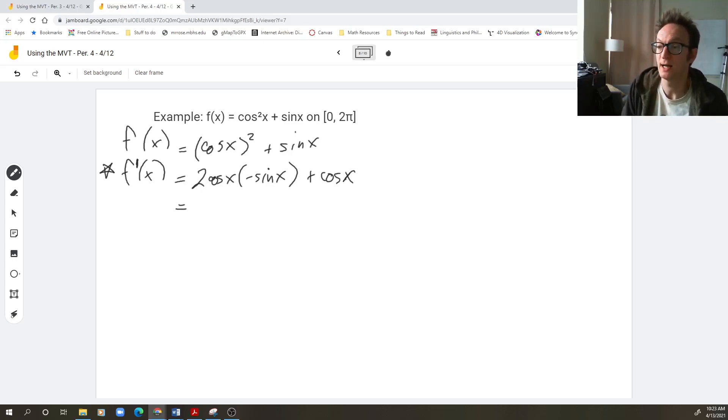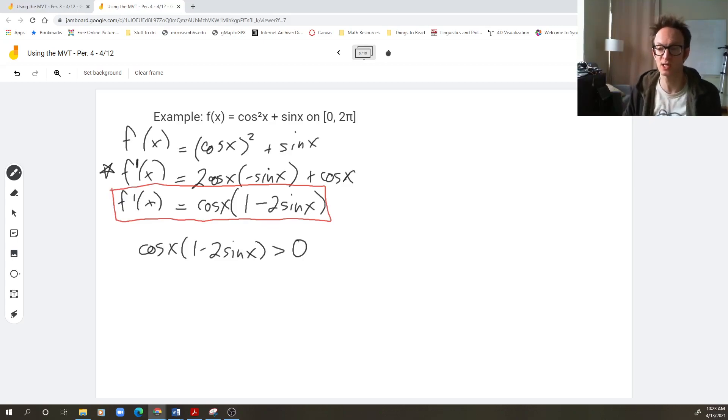I'll rewrite it maybe nicely one more time as well. I can factor out a cosine, right? So this is cosine times one minus two sine x. And if that's my derivative, so this is the version that I'll put a box around. And now I need to know, when is cosine x times one minus two sine x positive? I asked the question, when is it positive? Of course, when it's not positive, it's negative, or zero. So that kind of answers both questions.